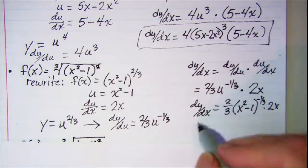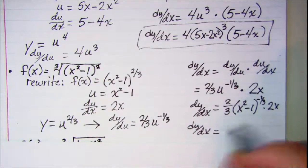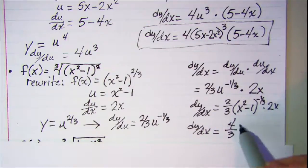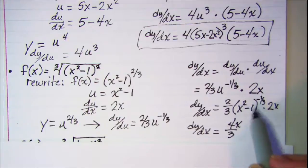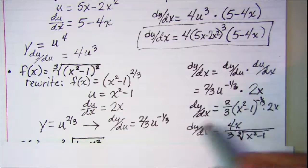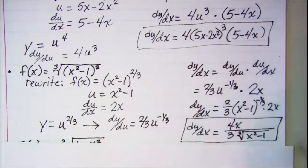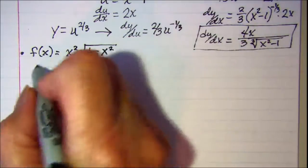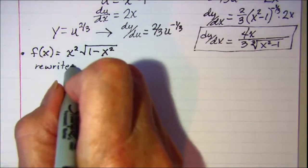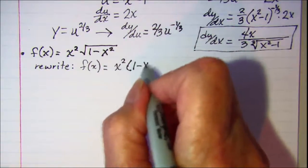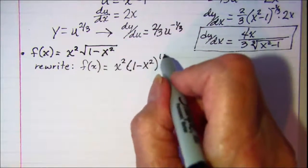This simplifies to 4x over 3, and putting the negative exponent in the denominator gives us a cube root of x squared minus 1 in the denominator. For one more example, let's rewrite the radical with a fractional exponent — this would be raised to the one-half power since it's a square root.